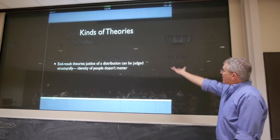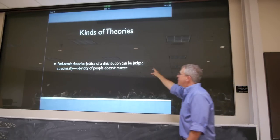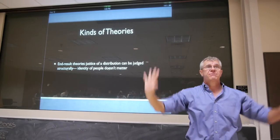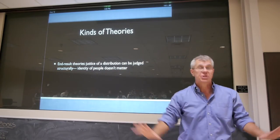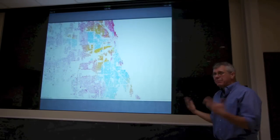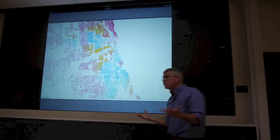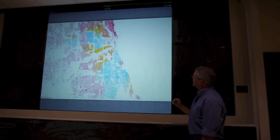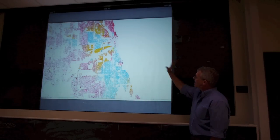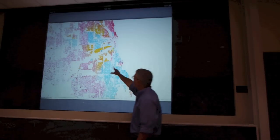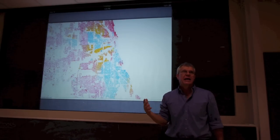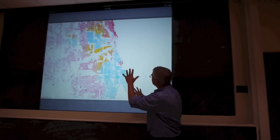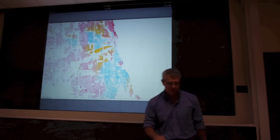The end result theory says justice can be judged structurally — the identity of people doesn't matter. We have to look at large-scale facts about society to answer questions about just distributions. So what do people concerned with end result theories do? They show you things like a map of Chicago by income, where the red areas are middle class, the yellow are poor, the blue are affluent. People concerned with structural theories of justice look at things like this and ask: how even is the distribution? Where are the poor people? Where are the wealthy?